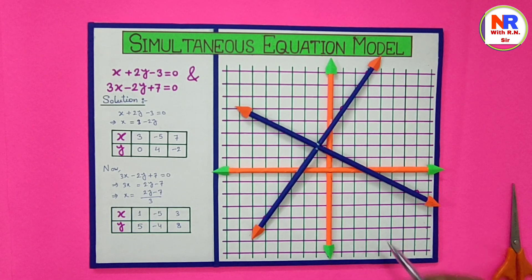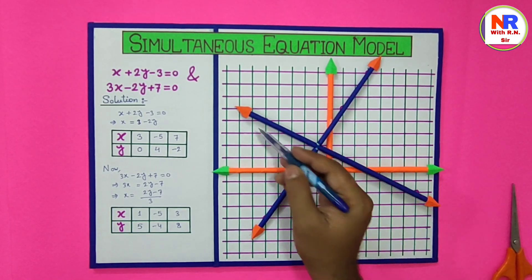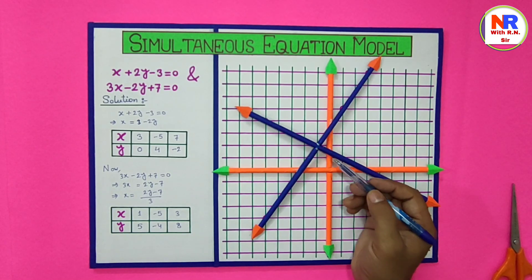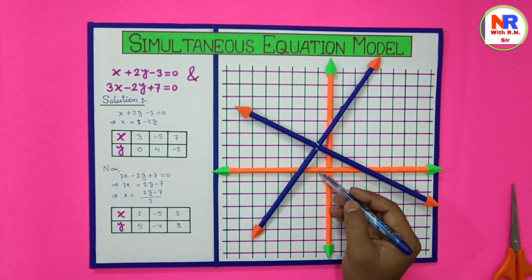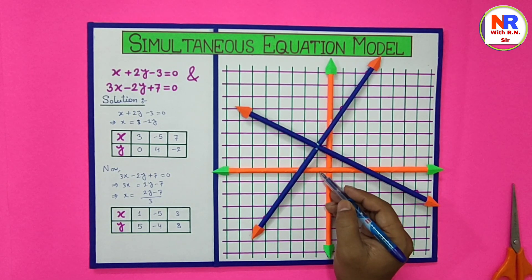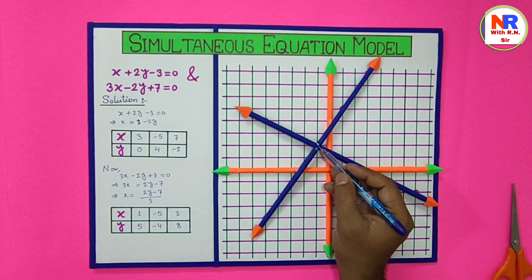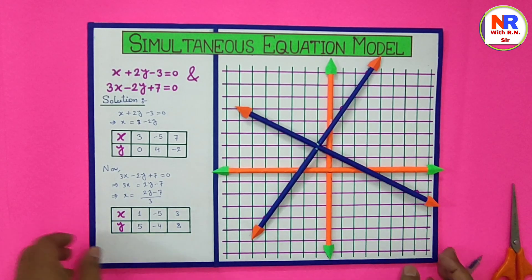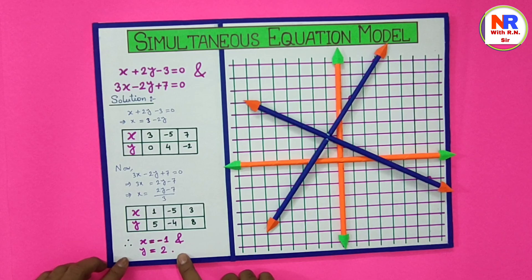You can see here this is the meeting point of these two equations. The point is minus 1 comma 2. So x value is minus 1 on the x-axis, and y value is 2 on the positive y-axis. This is the solution of the simultaneous equation: x equals minus 1 and y equals 2.